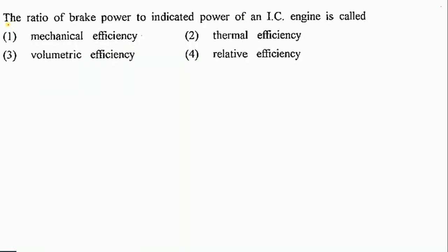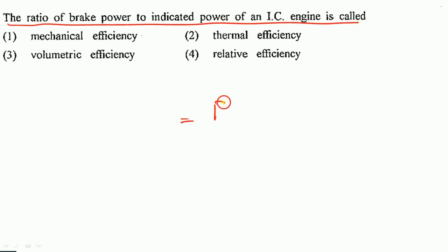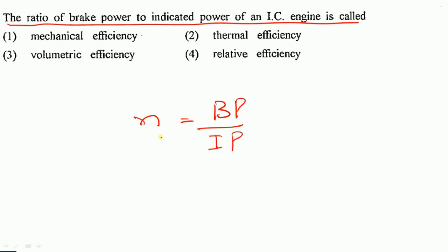The ratio of brake power to the indicated power of an IC engine is called? It is called mechanical efficiency. So option 1 — mechanical efficiency — is the correct option.